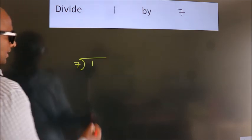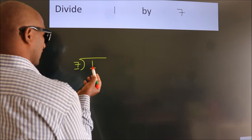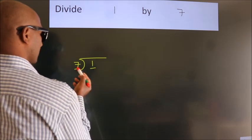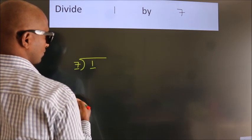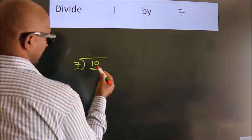Next. Here we have 1, here 7. 1 smaller than 7. So, what we should do is, we should put dot, take 0 here. So, 10.